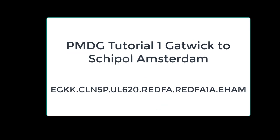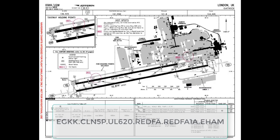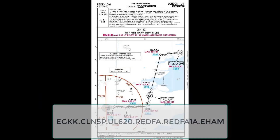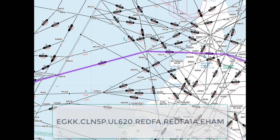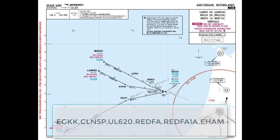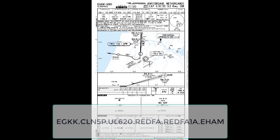We are going to set up and fly the Boeing 737 from Gatwick, London to Schiphol, Amsterdam, and in so doing follow the excellent tutorial that comes with the PMDG Boeing. We are going to start on runway 8R at Gatwick, fly the CLN-5P SID to Clacton. We are then going to use the UL-620 airway to fly to Redfoe Waypoint where we will enter the Redfoe 1A STAR to runway 18R at Schiphol, where we will do a CAT-2 ILS approach and auto land.